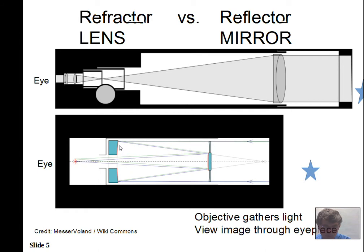Reflecting telescopes have another huge advantage: there can be bracing material behind the mirror, so mirrors can be made very large — up to 300 inches in diameter. The largest refracting telescope is about 40 inches. The glass of a lens cannot be braced from behind without blocking starlight, and glass is not perfectly solid — it bends. For a very large refracting telescope, as the tube points in different directions, the glass bends in different ways and you lose focus quality. Reflectors can be made more cheaply and larger than refractors.